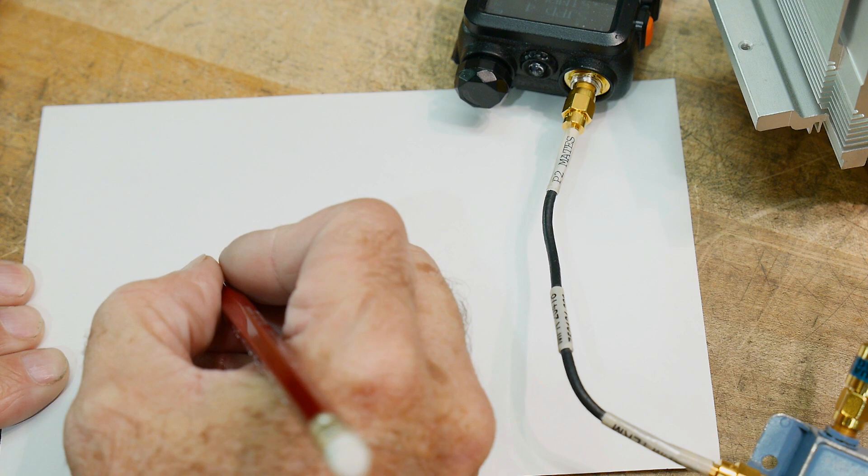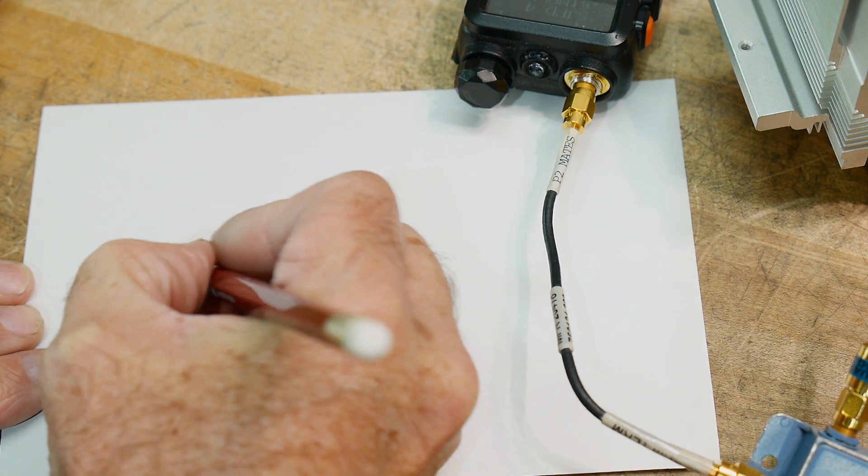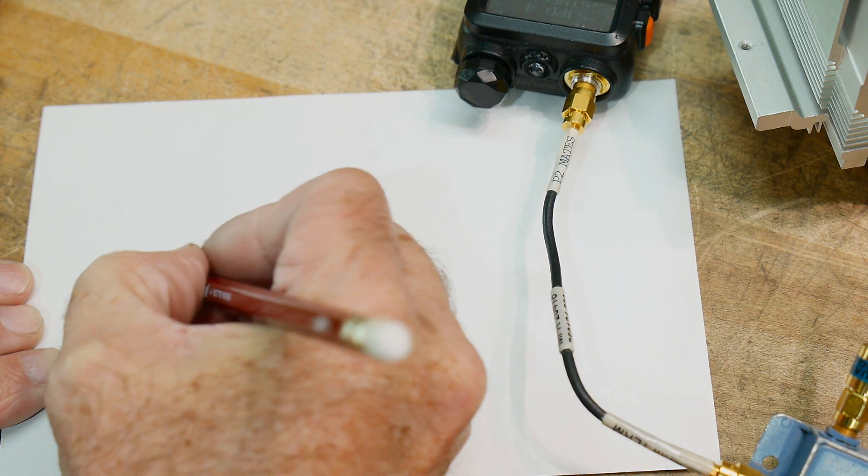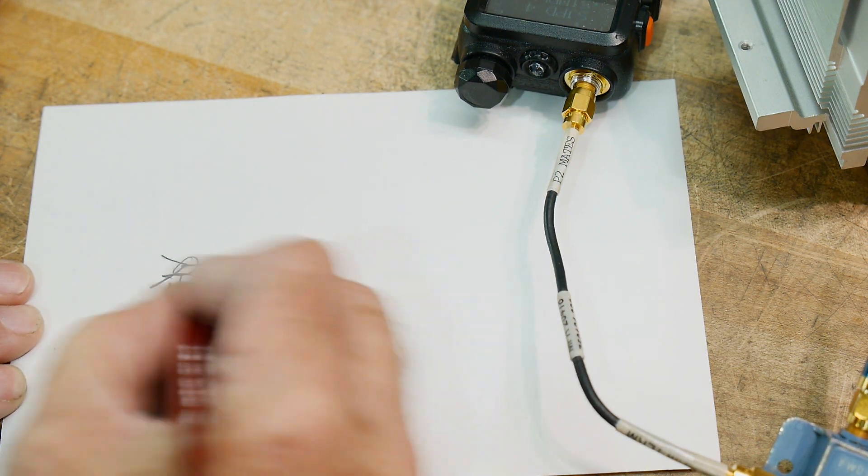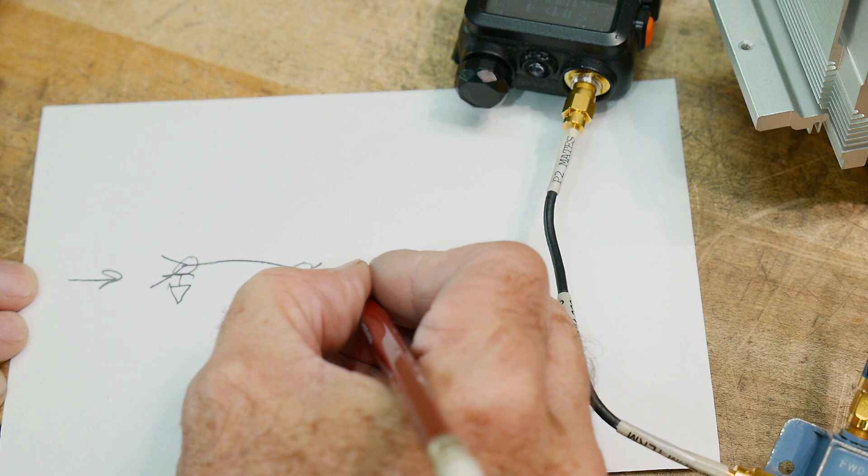A coupler is going to be a connector. There's going to be a connector here, and there's going to be a connector over here. And there's going to be a transmission line in between. So this is in, and this is out.